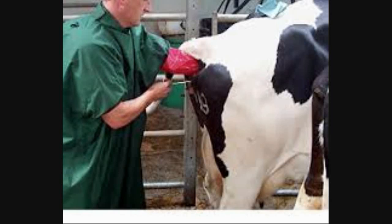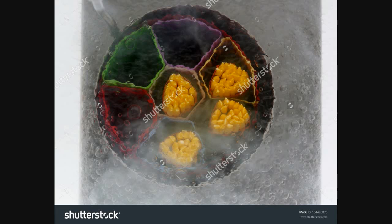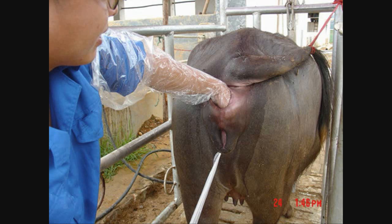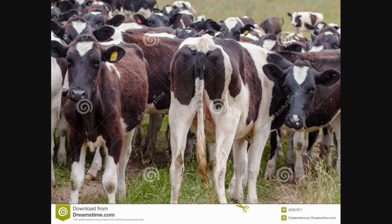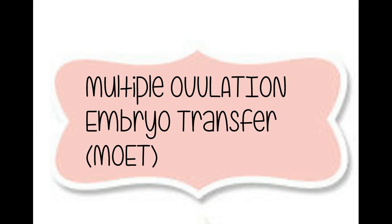Artificial insemination is a technique where semen from superior males is extracted, frozen, and at the time of breeding it is used and planted into the uterus of females so that more progeny is produced.